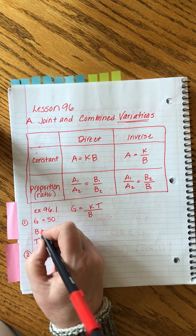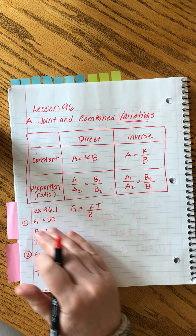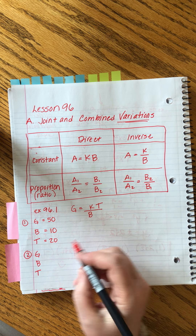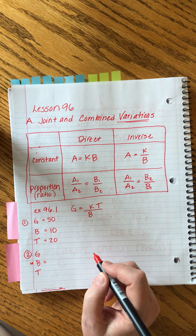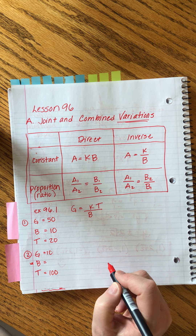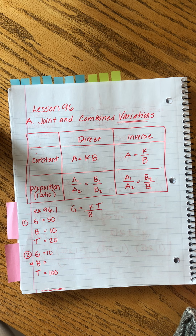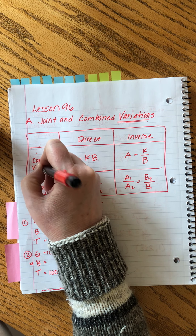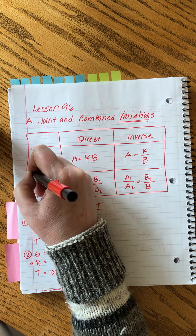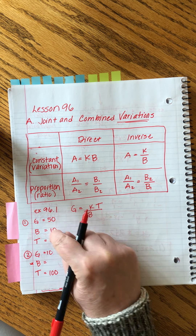Example 96.1: 'The number of girls varied inversely as the number of boys, and directly as the number of teachers.' We'll use the constant method. There's both an inverse and a direct variation going on together. Since boys are inverse, they go in the denominator; teachers are direct, so they go on top.